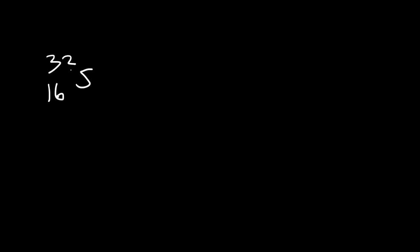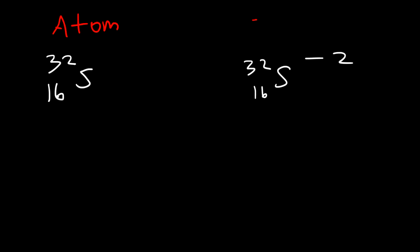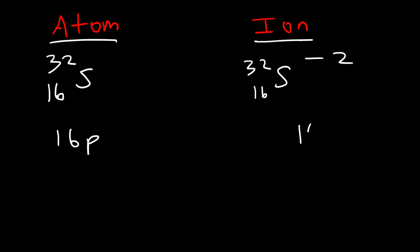Sulfur has an atomic number of 16 and a mass number of 32. We'll have the ion on one side and the atom on the other. How many protons and electrons are in these two particles? The number of protons equals the atomic number, so both particles contain 16 protons. In an atom, the number of protons and electrons will always be the same, so the atom has 16 electrons.